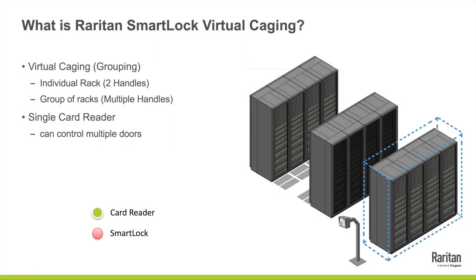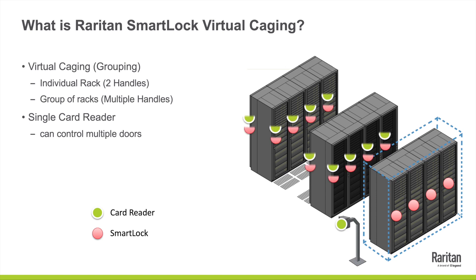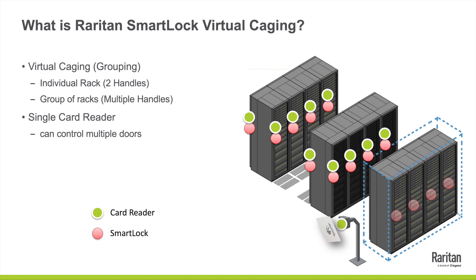Let's have a look in a bit more detail. Here we have three rows of cabinets — one of them has a blue dotted line which indicates a virtual cage. We've got red dots that indicate the smart lock, green dots that indicate the smart card reader, and here we have an RFID card. The way this works is that if someone arrives at the card reader with their card, it can be programmed to unlock all of the associated handles with that card.